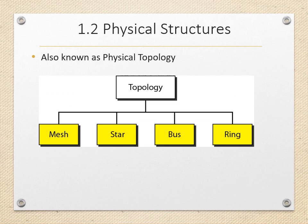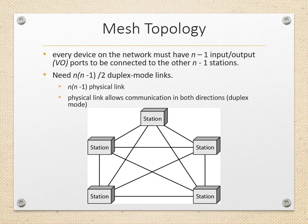The physical structure of the network is also known as physical topology. There are four types of topology: mesh, star, bus, and ring topology. In mesh topology, each device has a dedicated point-to-point link to every other device. If n is the number of devices in the network, every device should have n(n-1) ports to connect to every other device. Since it is a duplex link, we need n(n-1)/2 links.